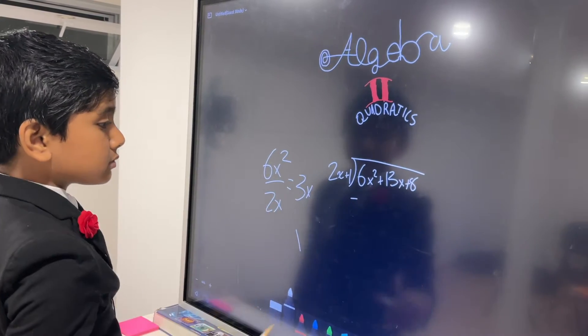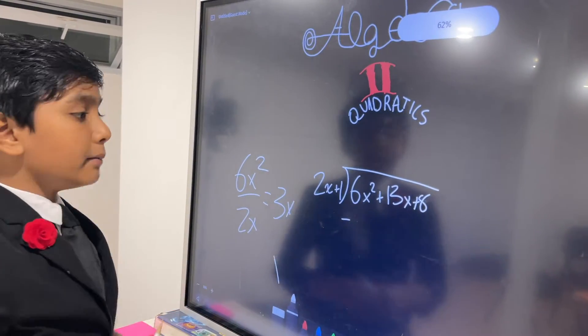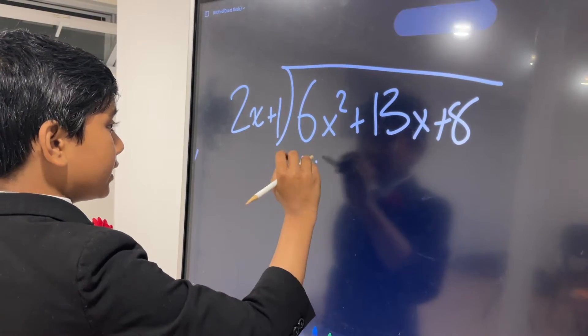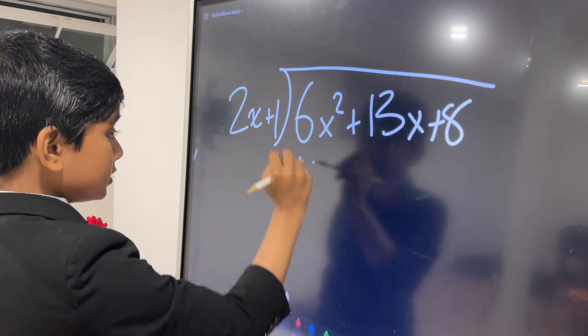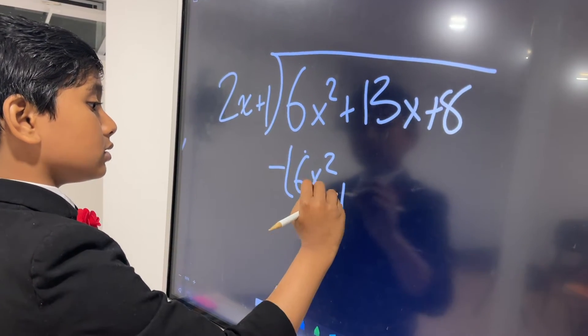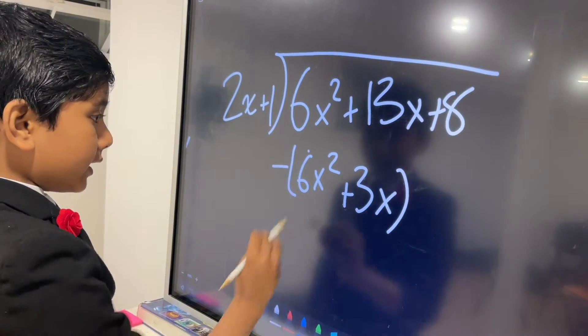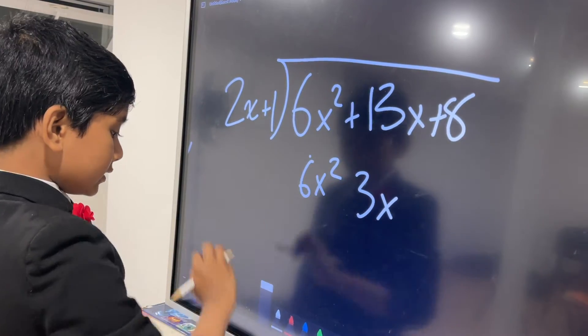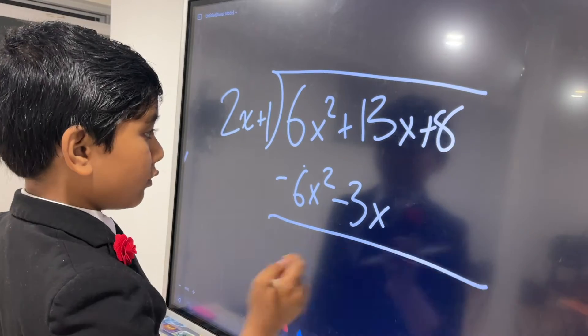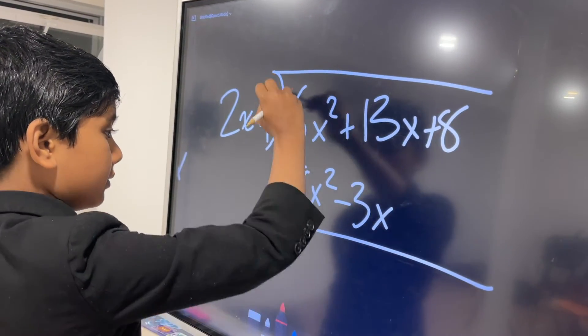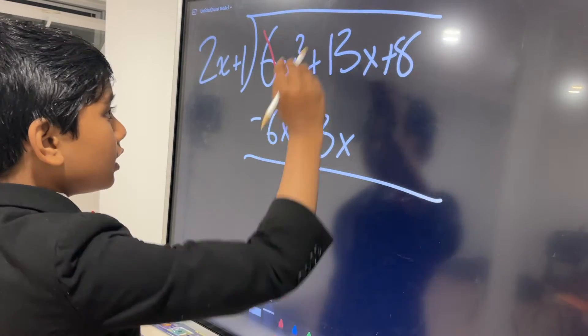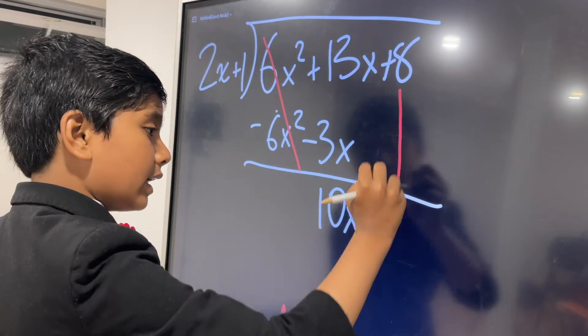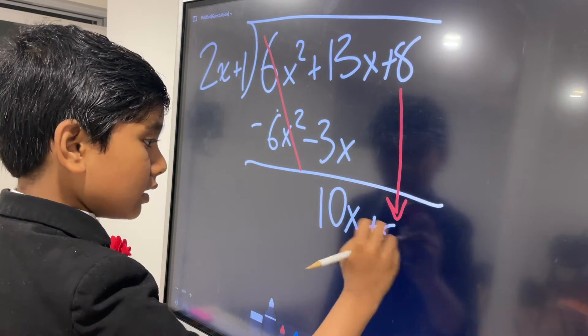So let's say we have the first term, which is 2x. All we need to do is take the first term of this, then divide the two by each other. So that would give us 3x. So now, multiply the entire thing by 3x, then obviously subtract it. So multiplying the whole thing by 3x would give us 6x squared plus 3x. Or, since we're distributing a negative, that would make this minus 3x.